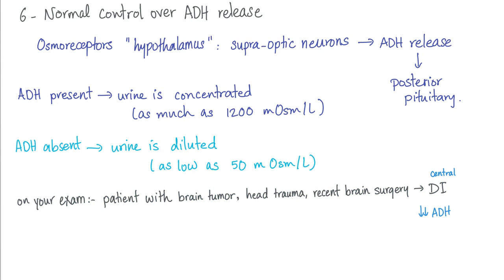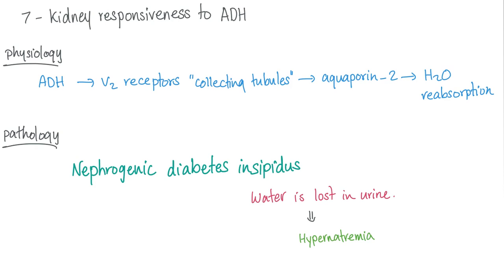Normal control over ADH release: osmoreceptors in the hypothalamus sense changes in tonicity. The supraoptic neurons in the hypothalamus release ADH, which is stored in the posterior pituitary — the posterior pituitary does not secrete ADH itself but capitalizes on the hypothalamus. ADH present means urine is concentrated; ADH absent means urine is diluted. On your exam, any patient with a recent history of brain tumor, head trauma, or recent brain surgery can have central diabetes insipidus — decreased secretion of ADH. When you have nephrogenic diabetes insipidus, the kidney no longer responds to ADH via V2 receptors, water is lost in urine, and this leads to hypernatremia.